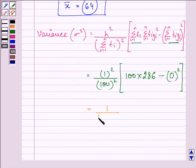Simplifying it, we have 1 upon 10,000 into 28,600. Now simplifying it, we have the answer as 2.86.